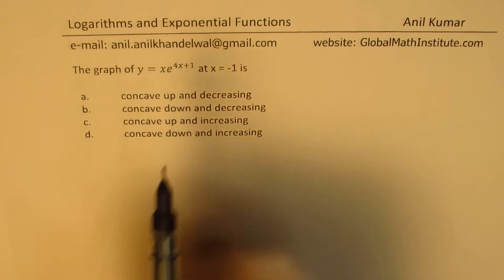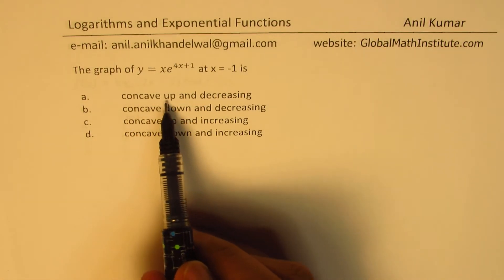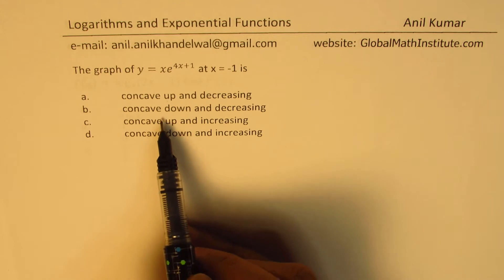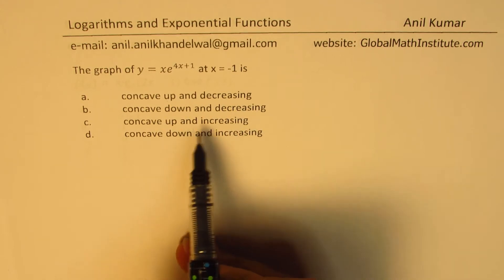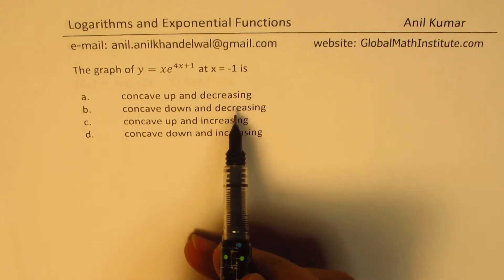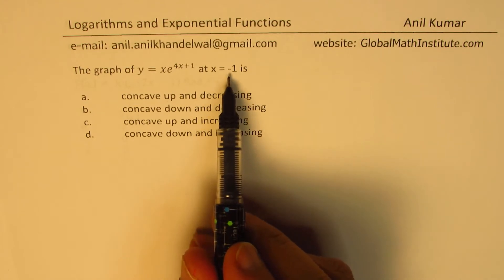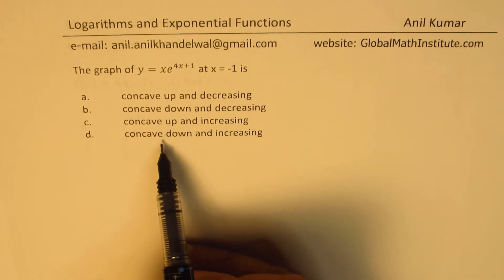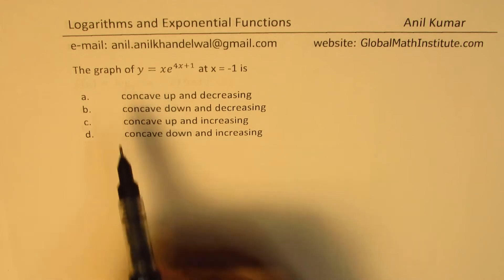There are two parts to this. We have to figure out concave up or down, and increasing or decreasing. To figure out increasing and decreasing, we'll find the first derivative at x equals minus 1, and for the concavity, we'll check the second derivative.